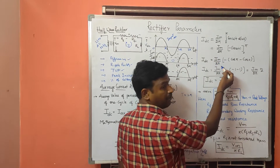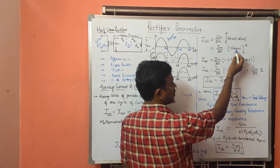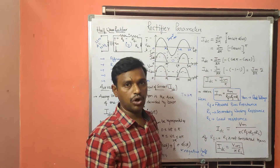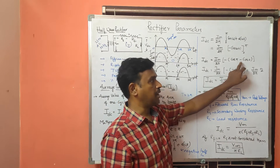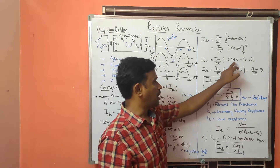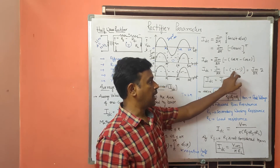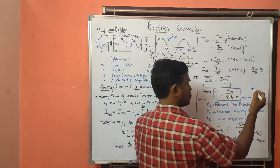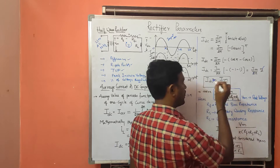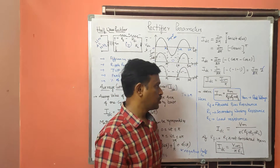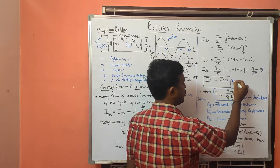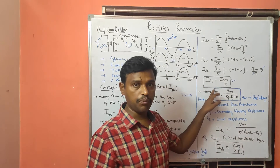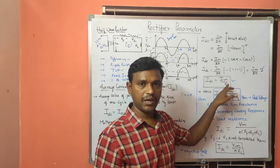Substituting the limits: IDC = (IM/2π) × [−(cos π − cos 0)] = (IM/2π) × [−(−1 − 1)] = (IM/2π) × 2. The 2's cancel, giving IDC = IM/π. This is the DC component of the current for a half-wave rectifier.